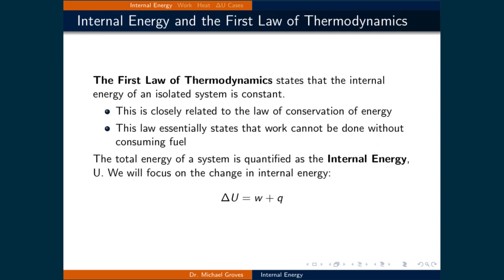Now that we have an understanding of the internal energy of a system, let us define the first law of thermodynamics. It states that the internal energy of an isolated system is constant. This is closely related to the law of conservation of energy, and essentially states that work cannot be done without consuming fuel. The internal energy is denoted by U. When discussing things in the context of the first law, we focus on the change in internal energy, which is quantified as the work performed plus the heat transferred.